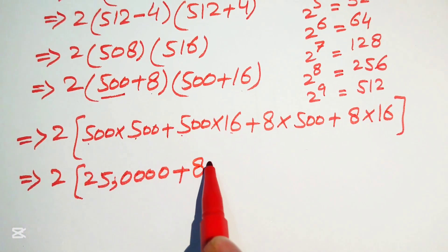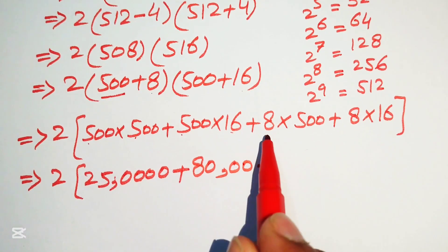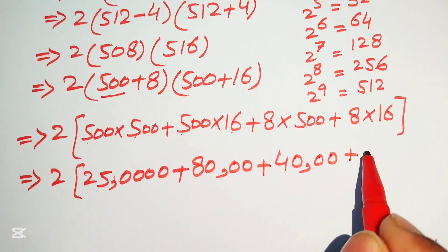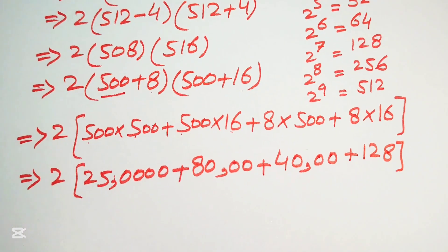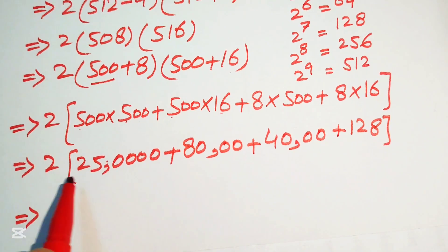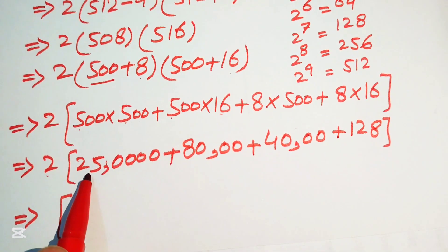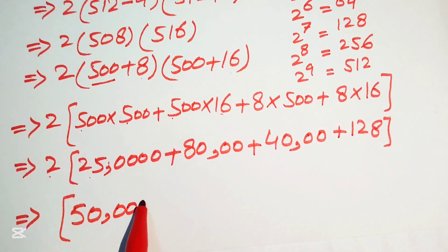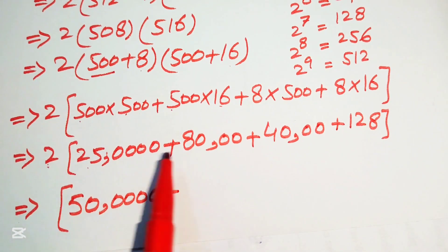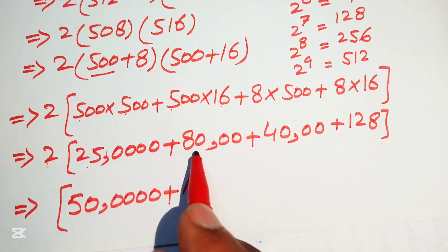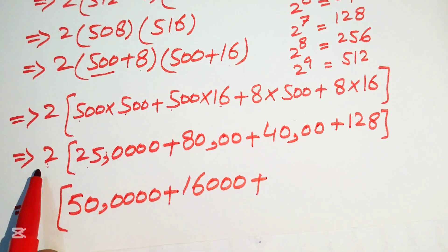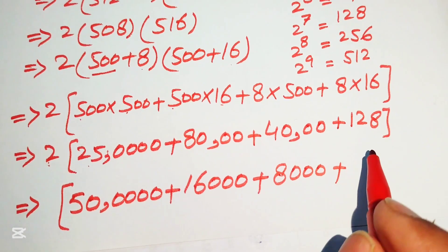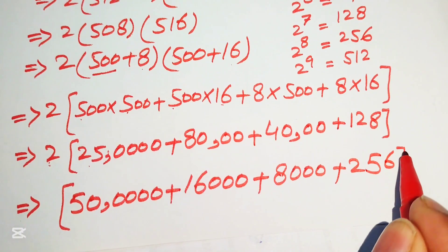Using a multiplication trick: 500 times 500 — multiply 5 times 5 to get 25, then add four zeros, giving 250000. 500 times 16: multiply 5 times 16 to get 80, then add two zeros, giving 8000. 8 times 500: 8 times 5 is 40, add two zeros, giving 4000. And 8 times 16 equals 128. Then multiply all terms by 2: 2 times 25 is 50 (add four zeros), 2 times 8 is 16 (add three zeros), 2 times 4 is 8 (add three zeros), and 2 times 128 is 256.